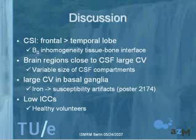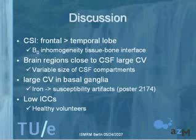The temporal lobe suffers from B0 inhomogeneity due to tissue-bone interfaces nearby. Furthermore, we noticed that brain regions close to CSF-containing spaces have large coefficients of variation, probably due to the variable size of CSF compartments throughout the population studied. We also noted large coefficients of variation in the basal ganglia, and we hypothesize this is related to iron. Iron induces susceptibility artifacts, and these artifacts are apparently not reproducible — at least with the methods we used — probably because of head positioning: if the head is slightly tilted relative to the first session, it induces large artifacts.